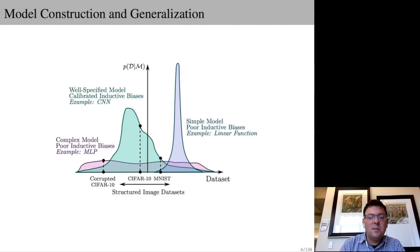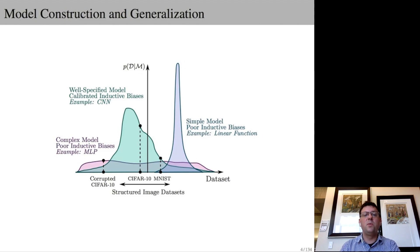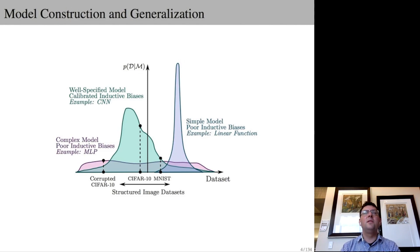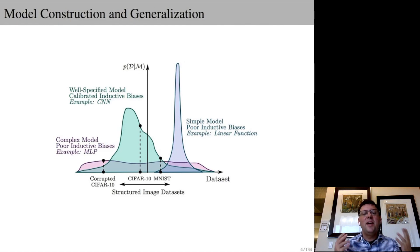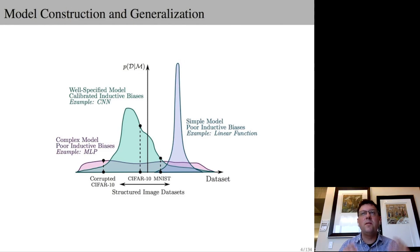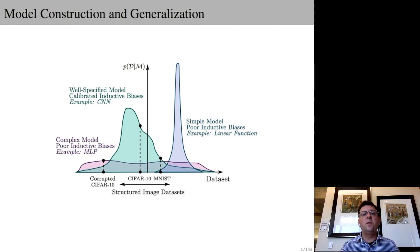In this diagram, we have a conceptualization of all possible data sets on the horizontal axis and the marginal likelihood or evidence on the vertical axis — the probability that we would generate a data set if we randomly sample from the parameters of our model. The linear model can just generate straight lines with different slopes and intercepts, so not very many data sets, but it gives a lot of mass to those data sets. A multilayer perceptron with many hidden units can generate a wide range of data sets but won't give any one much probability. A convolutional neural net is very flexible and has particular inductive biases like translation equivariance, meaning these models give reasonable mass to structured image data sets and provide good generalization.